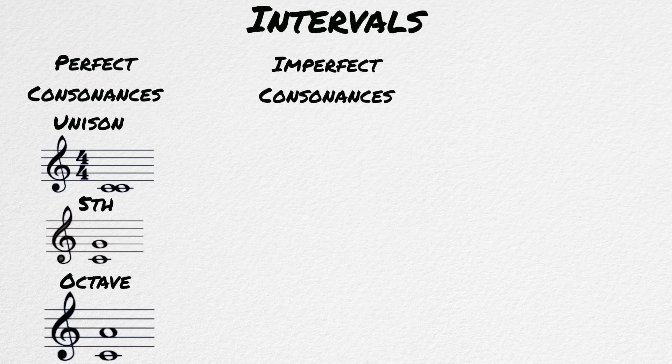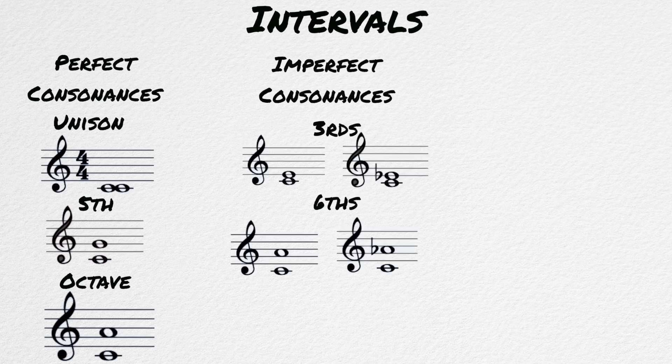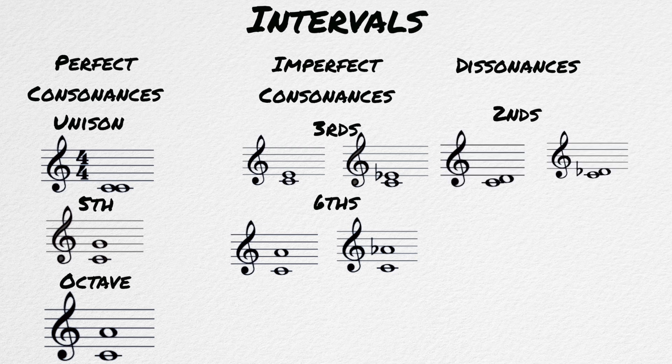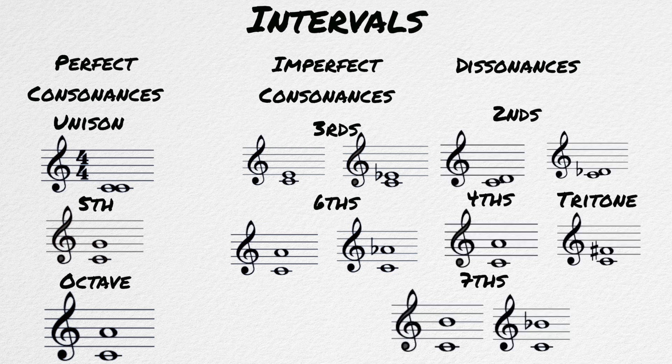First, intervals. All intervals were broken down into three categories. Perfect consonances, which included the unison, the fifth, and the octave. Imperfect consonances, which includes the third and the sixth. And dissonances, which includes seconds, fourths, sevenths, and tritones.